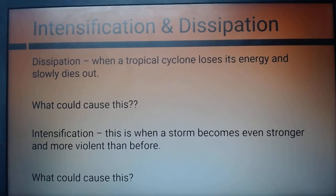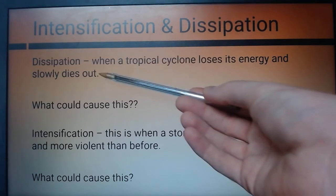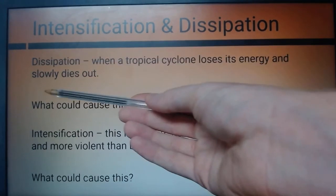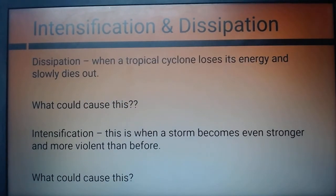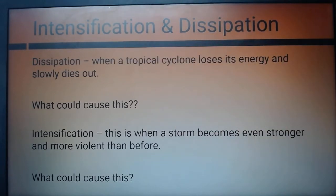Think about the ingredients it needs. First things first, it needs to have hot warm oceans. So what if we replace the hot water with cold water — would that cause the hurricane to die? Absolutely. So number one you can put: time spent over cold oceans. That would cause it to dissipate and lose all its energy.